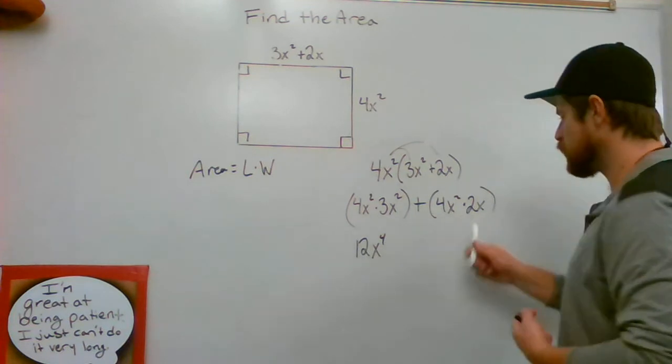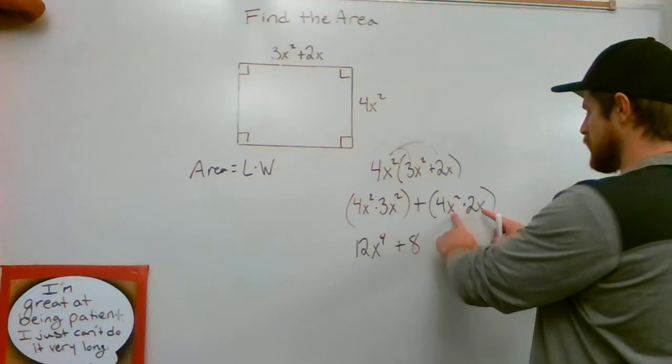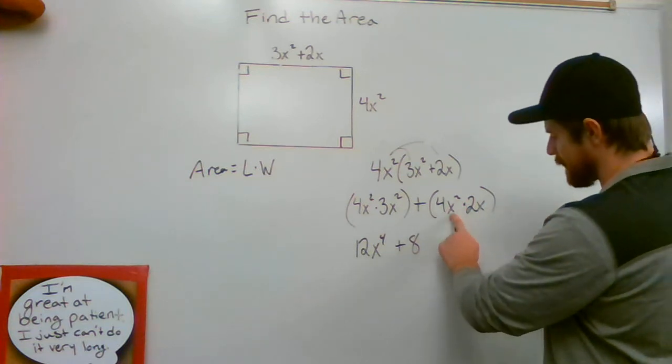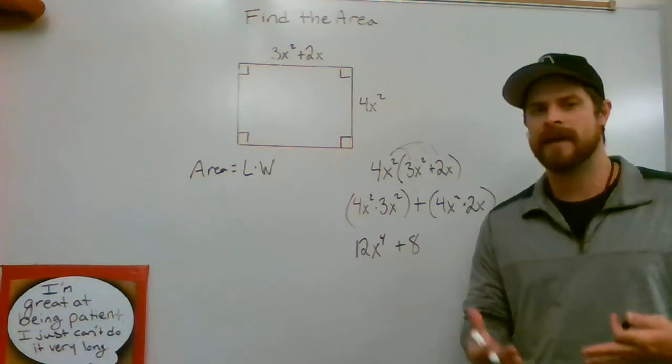4 times 2, don't overthink it, is 8. Do this part first, then do this part. Bases are the same. I have an x and another x. Product rule tells me to add my exponents.